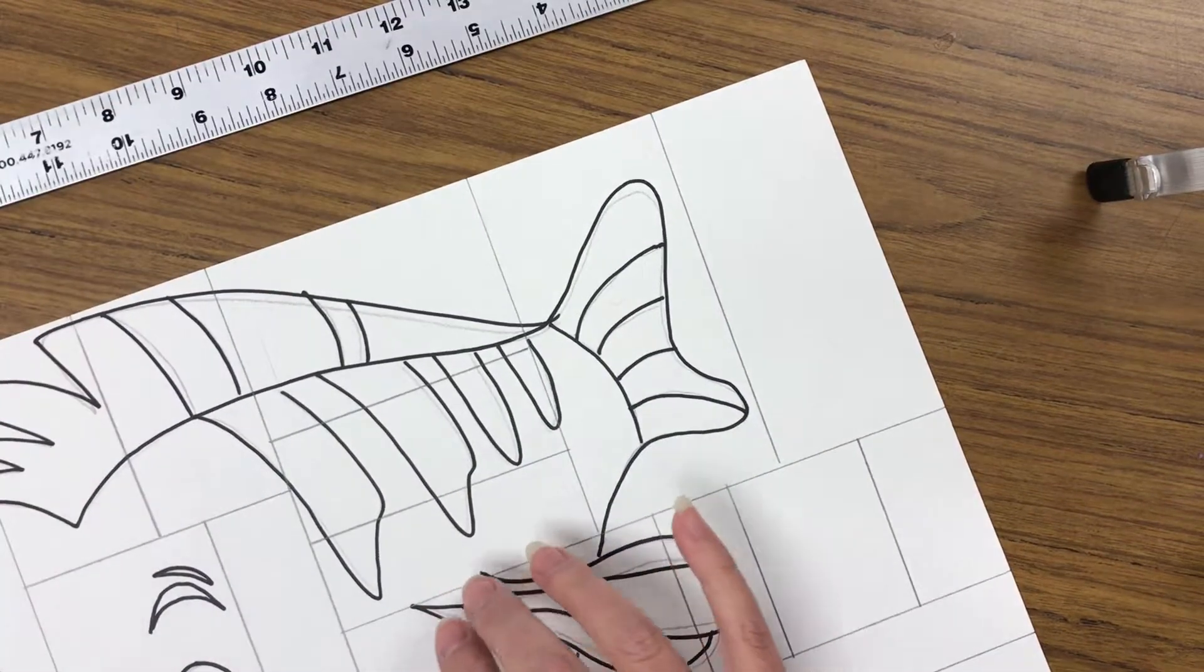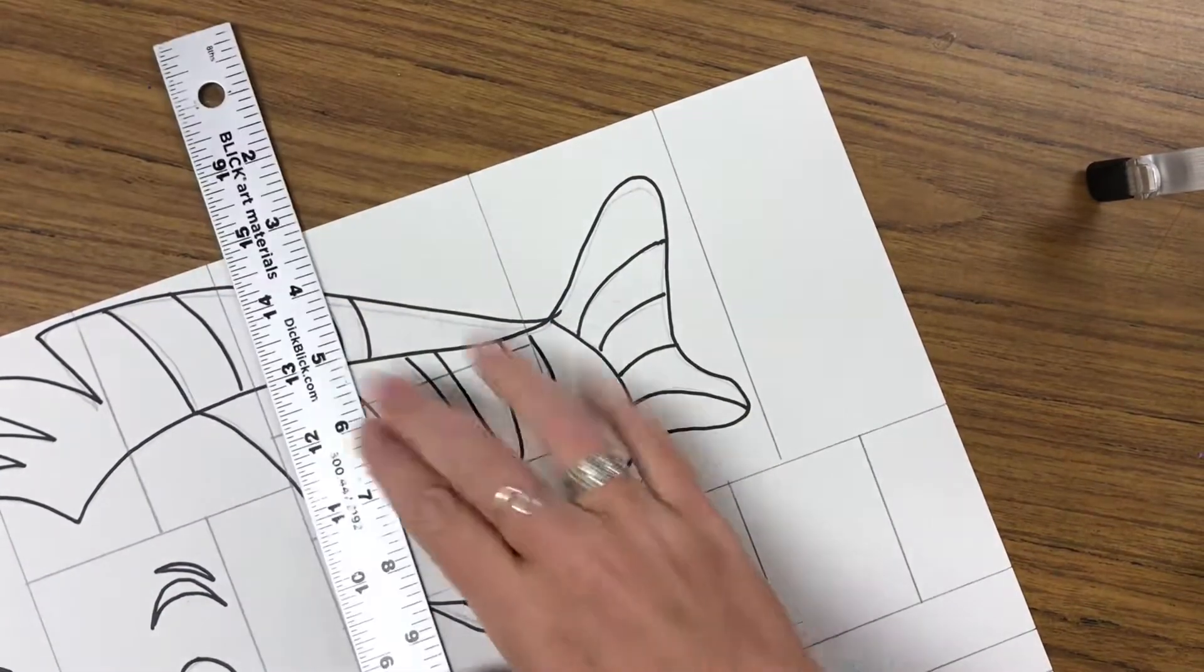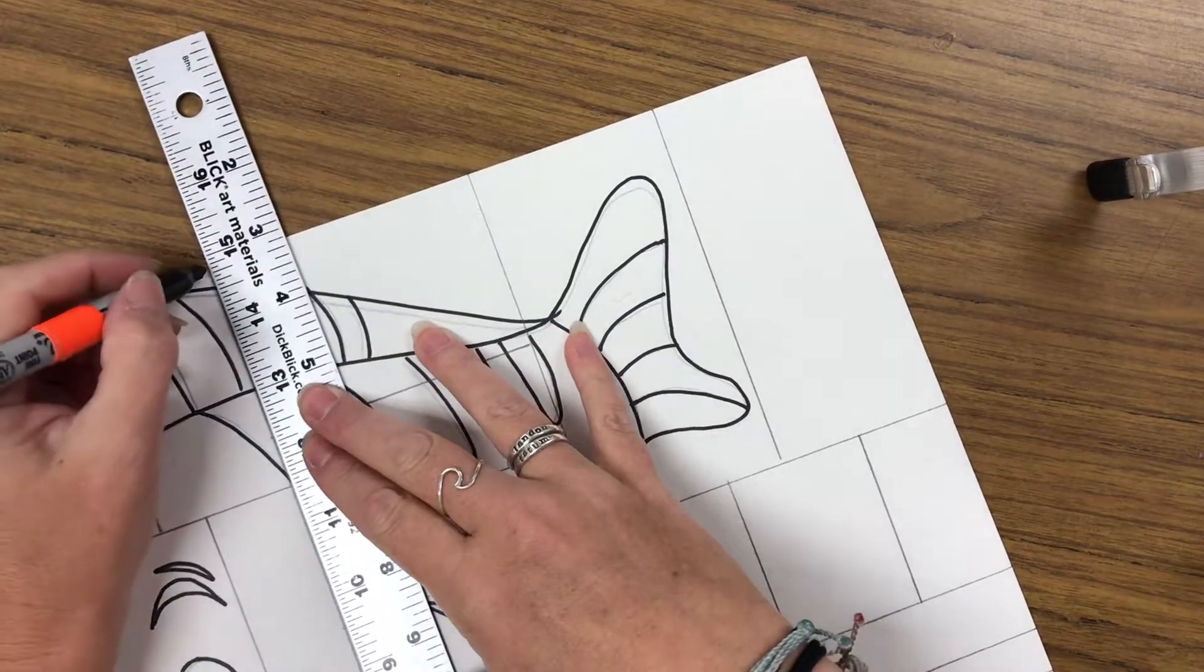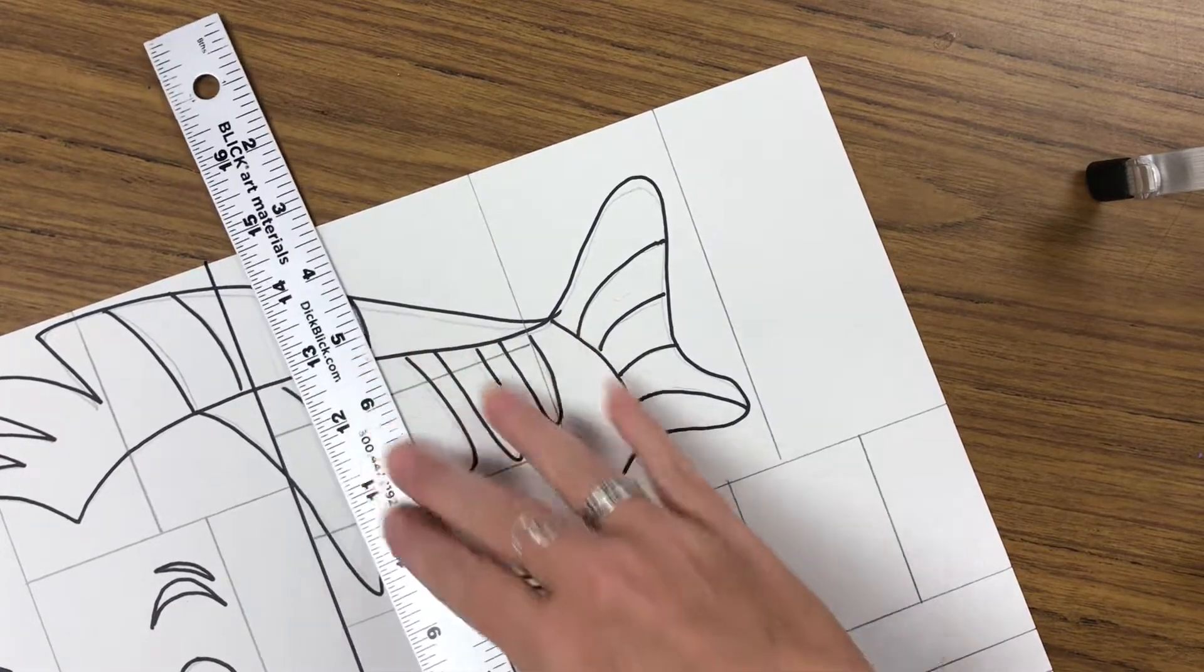Once you finish drawing your lines in pencil, you're going to go back in and trace them with a Sharpie. Or you can go ahead and draw your lines with a Sharpie. That's up to you. Whatever you feel most comfortable with.